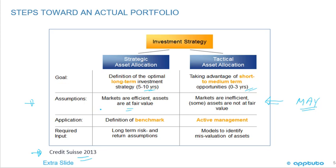Under strategic asset allocation — long-term — the assumption is that markets are efficient and assets are at fair value. Under tactical, markets are sometimes inefficient and some assets are not always at fair value. For strategic asset allocation, the application is defining the benchmark, with required inputs being long-term risk and return assumptions, pointing toward a passive strategy. For tactical asset allocation, you're in the area of active management, using models to identify misvaluation of assets, find mispricings, and try to outperform the passive benchmark. And that's the last slide for this LOS.